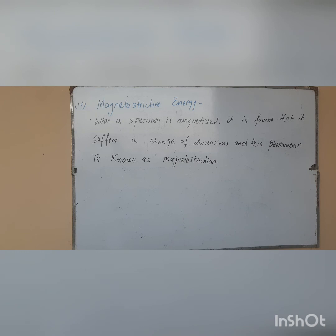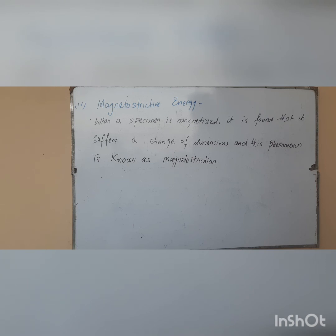In summary, a crystal of iron does not form a single domain but divides itself into many domains because of the competition between these different types of internal energies. In the coming lecture, we will calculate the domain wall thickness, which is decided by the competition between the anisotropy energy and the exchange energy.